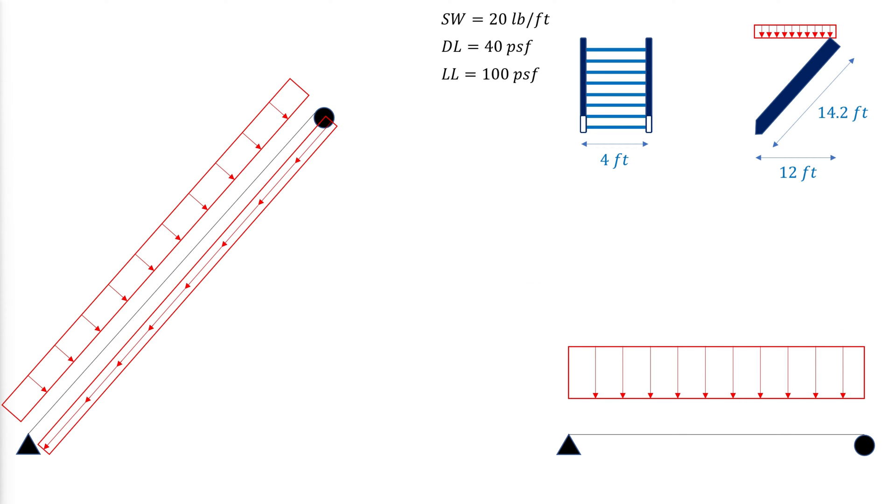For example, if we were to consider a 4 foot wide staircase with a 14.2 feet long stringer and a projected horizontal length of 12 feet that has a self-weight of 20 pounds per foot and a dead and live load of 40 and 100 pounds per square foot, respectively.